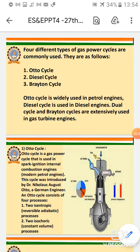This is the last lecture of the first unit. In this lecture, we are going to discuss the different types of gas power cycles. There are basically three important gas power cycles: first is the Otto cycle, second is the Diesel cycle, and third is the Brayton cycle. The Otto cycle is widely used in petrol engines, and is also known as the petrol cycle. The Diesel cycle is used in diesel engines, and the Brayton cycle is used in gas turbine engines. We will start with the Otto cycle, which is a gas power cycle used in spark ignition internal combustion engines.